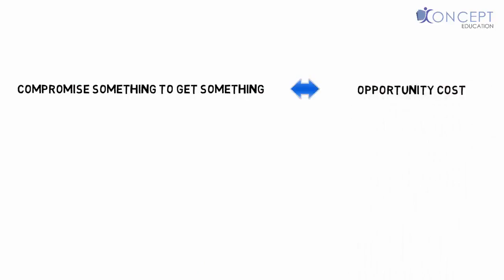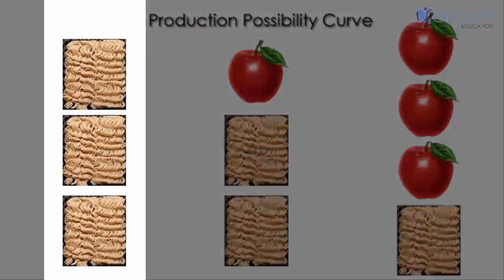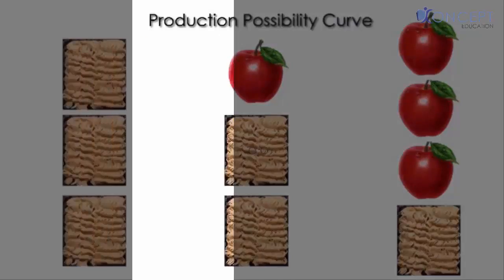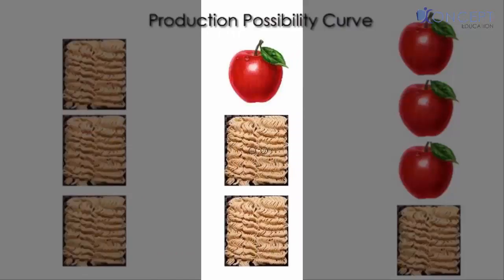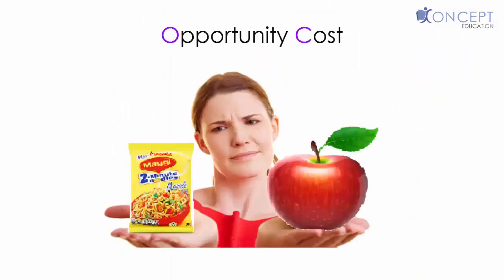Likewise, we saw here that if we had three bricks of Maggie, how many apples could we have? We could have zero apples. But if we, instead of three bricks, if we thought, let's see two bricks, we compromised one brick of Maggie. But when we compromised that one brick of Maggie, what do we gain? We gain one apple. So this is where it comes. This is called the opportunity cost. The opportunity cost of one brick of Maggie is one apple.